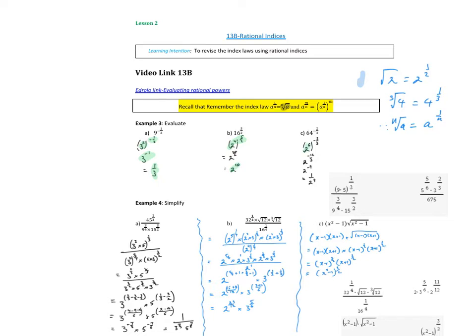Same thing, 64 is 2 to the power of 6. And again, 6 times negative 2 thirds is going to be negative 12 on 3, which is 2 to the negative 4, which we write as a positive index as 1 over 2 to the 4.